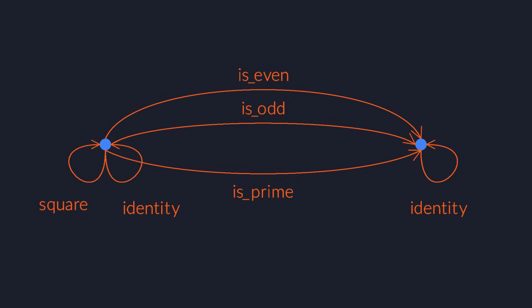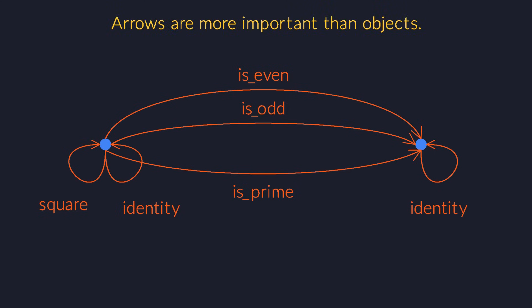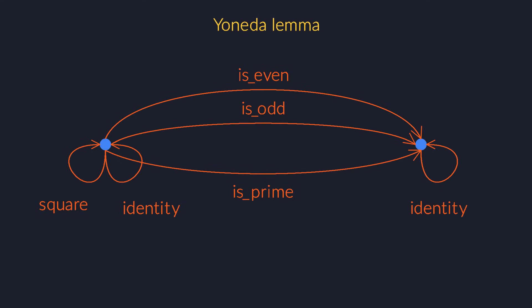If you want to summarize category theory in a single sentence, it would go something like this: ignore the contents of an object and only look at the arrows to other objects. Surprisingly, it turns out that this is actually enough. There's a famous theorem called the Yoneda Lemma which shows that you can always know everything you need to know about an object by looking only at its relations with other objects.